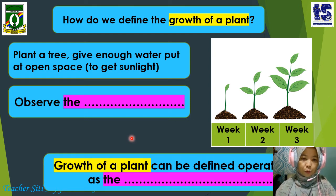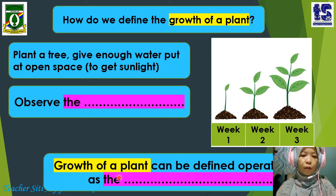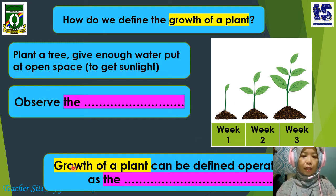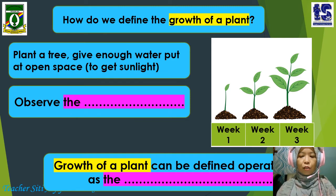The statement is: the growth of a plant can be defined operationally as the number of leaves. The yellow colour refers to what we investigate, while the purple colour refers to what we measure.